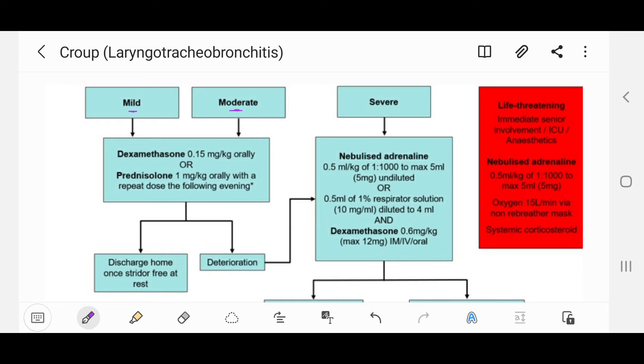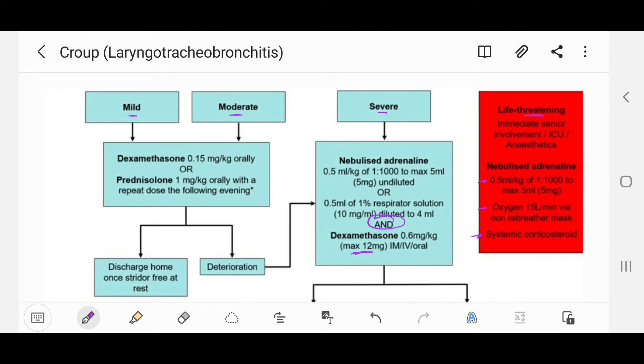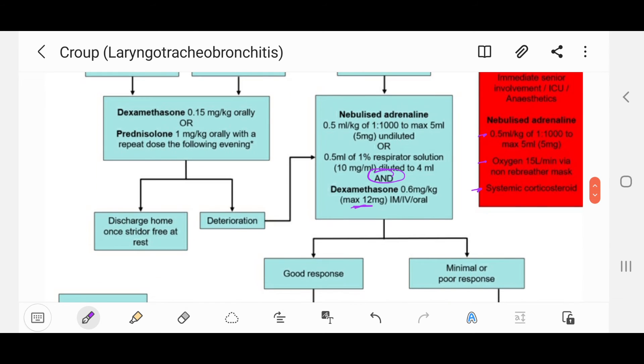If there's deterioration or the child presents with severe croup, we give nebulized adrenaline 0.5 ml per kg of 1 to 1000 to maximum 5 ml undiluted, or 0.5 ml of 1% respirator solution (10 mg per ml) diluted to 4 ml, and dexamethasone 0.6 mg per kg with a maximum dose of 12 mg IM, IV, or orally. If we have good response...